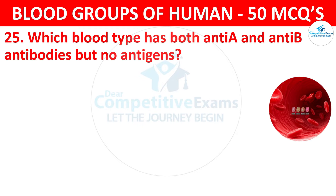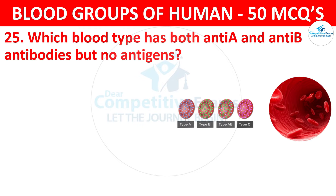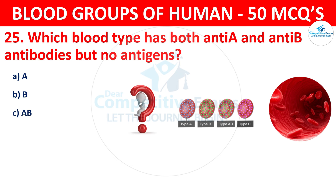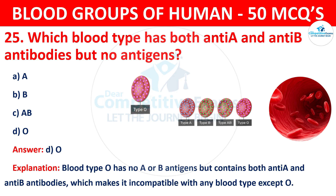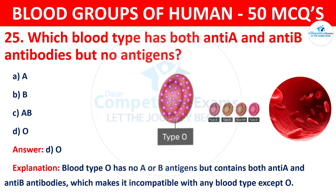Question 25: Which blood type has both anti-A and anti-B antibodies but no antigens? The correct answer is D, blood type O. Blood type O has no A or B antigens but contains both anti-A and anti-B antibodies, which makes it incompatible with any blood type except blood type O.